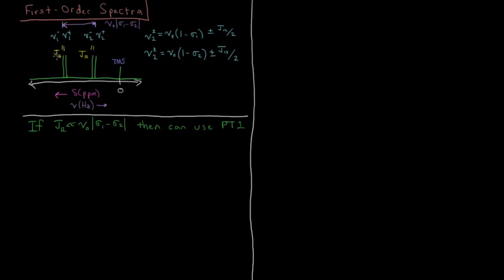So J12, the coupling constant, is given in terms of hertz, whereas in order for the difference between these two peaks to also be in hertz, you have to do the frequency of the spectrometer times the difference in the shielding constants. The formula for each of these peaks — their resonance frequency — for nu1 plus or minus, that'll be the spectrometer frequency times one minus sigma1, plus or minus J12 over two. And for nu2 plus or minus, that equals nu0 times one minus sigma2, plus or minus J12 over two.